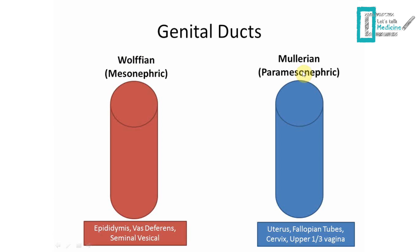These ducts give us the internal genital structures. In males, the Wolffian duct gives us the epididymis, vas deferens, and seminal vesicles. The Müllerian duct gives us, in females, the uterus, fallopian tubes, cervix, and the upper one-third of the vagina. To get either male or female, one of these tubes has to persist and one has to regress.